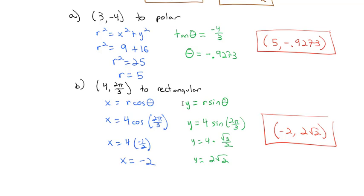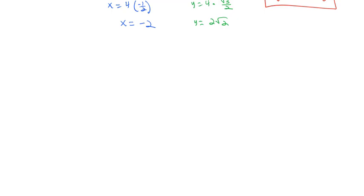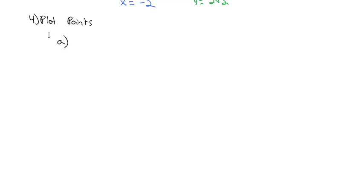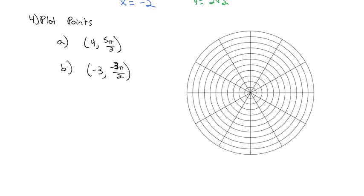Now that we've looked at how to convert between rectangular and polar coordinates, we're ready to actually plot points. We're going to plot two points on this graph: point (4, 5 pi over 3) and point (negative 3, negative 3 pi over 2). When graphing in polar coordinates, we can convert to rectangular or just graph using our angles on what's called a polar grid. Each circle on the polar grid represents a radius of 1, and we can count out radii just like we count on the x-axis. Each line on the grid is labeled in increments of pi over 6.